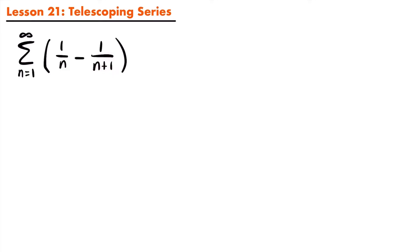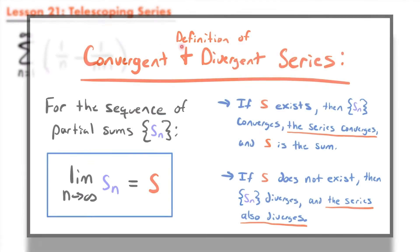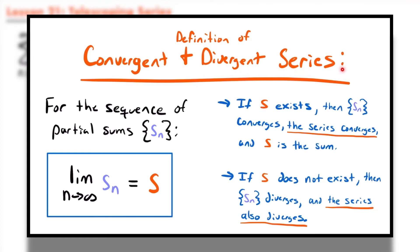Now, if we want to determine if this series converges, and if it does, what specific value it converges to, what we would need to do is find the nth partial sum and then take the limit of that partial sum as n approaches infinity and see if it exists. If you don't remember, the definition of a convergent and divergent series is the following.